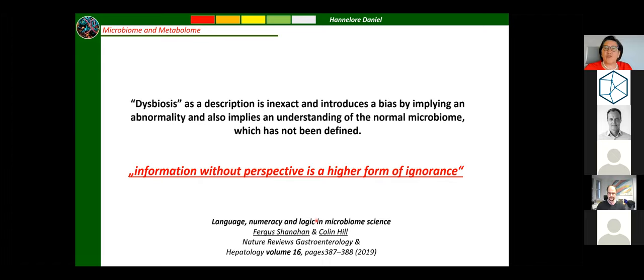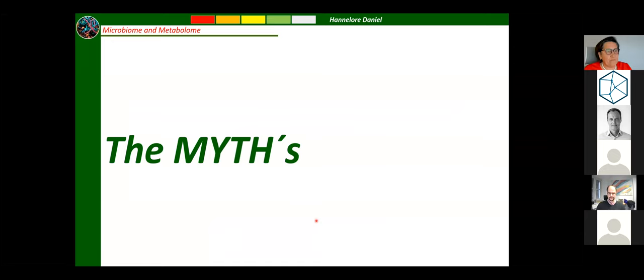Around 85% of the variants in the human microbiome still remains unexplained. Dysbiosis as a description is inexact and introduces a bias by implying an abnormality — it also implies an understanding of the normal microbiome, which has not been defined. We don't know what is normal, we don't know what is healthy, yet we quite frequently use dysbiosis, and that is not scientifically correct. As Fergus Shanahan says, information without perspective is a higher form of ignorance.